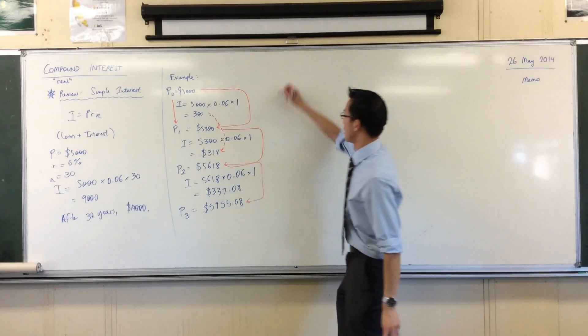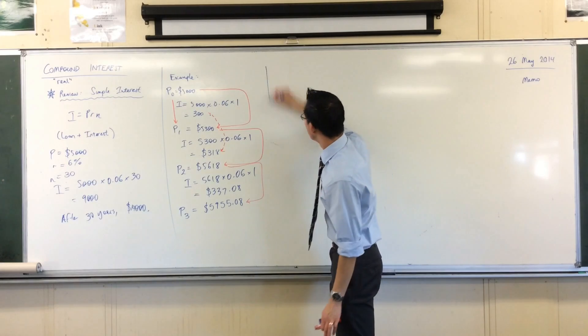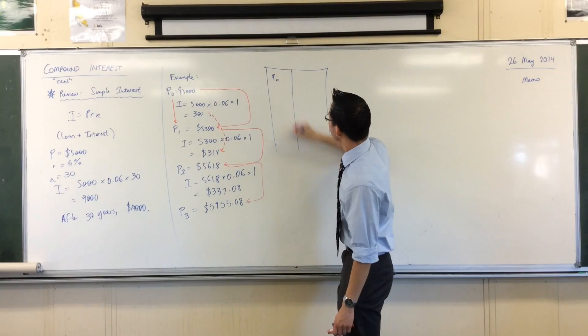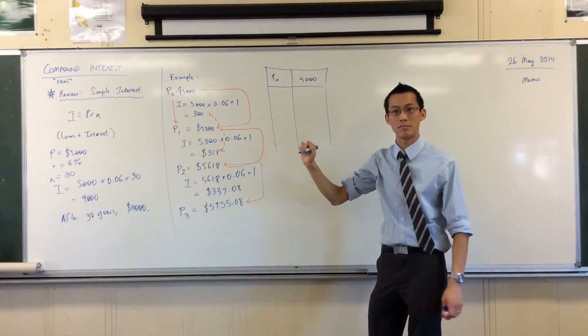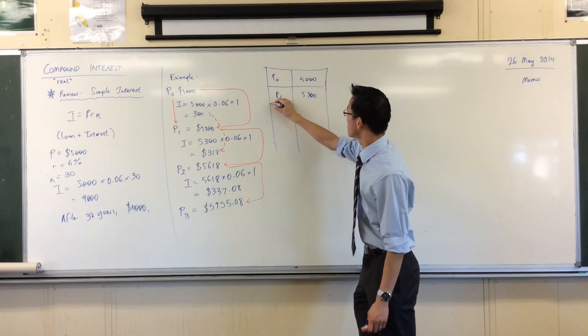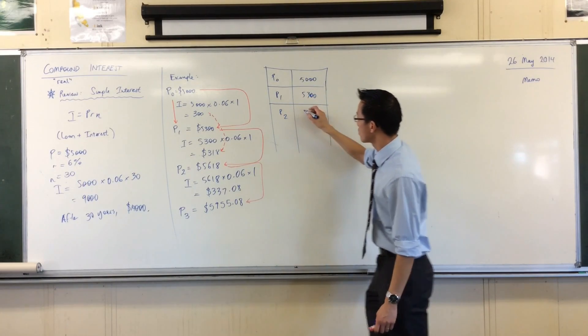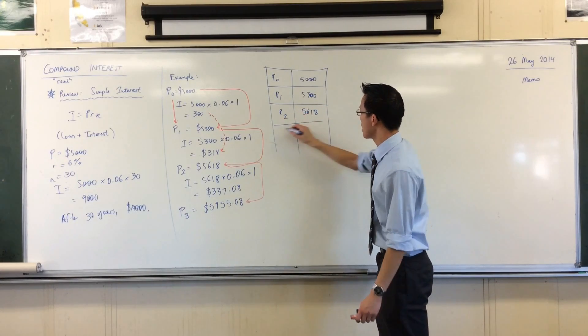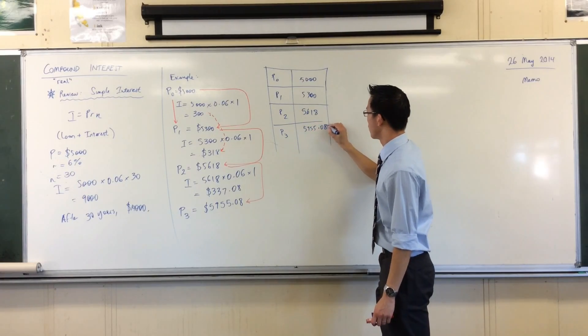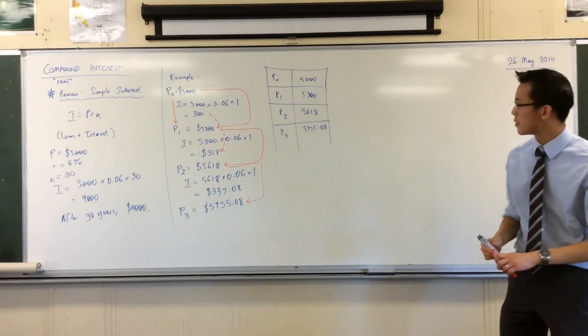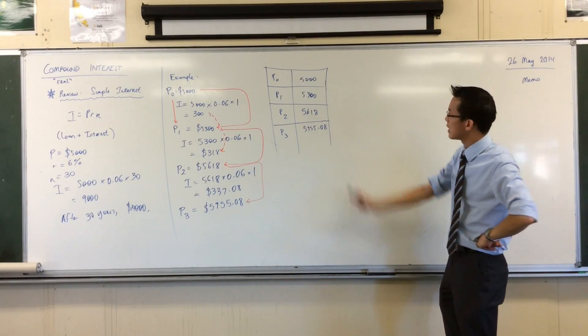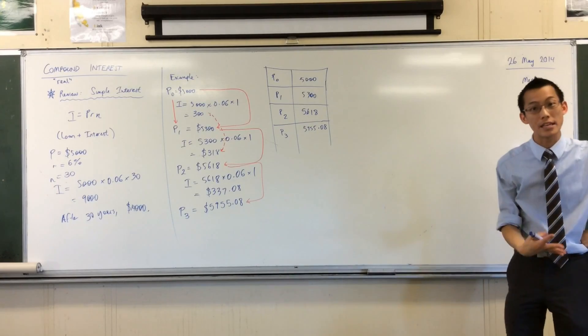Well, I want you to write down these numbers for me. Let's put it in a little bit of a table. So I'll go P0 is 5,000, P1 is 5,300, P2, and we've gone up to P3. Now I want you to have a look at these numbers. How are they getting bigger each time and is there a way we can do this faster?